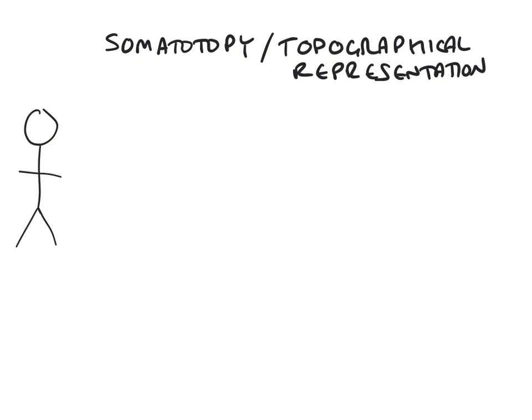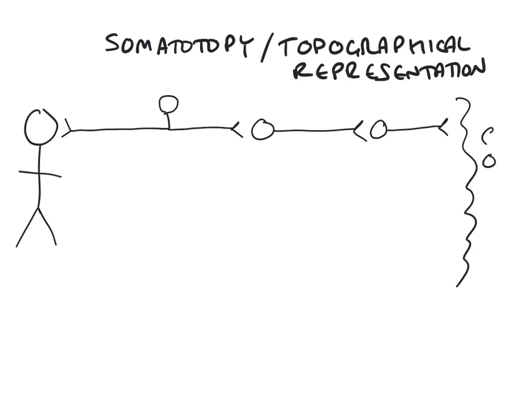So let's start off by drawing a person — there's the head, the arms and the legs. You can see I'm not a natural artist, but it works. Let's think of these three regions: the head, the arm, and the leg. The head has various receptors that communicate with first-order sensory neurons, which in turn synapse upon second-order sensory neurons, which in turn synapse upon third-order sensory neurons that project to the sensory cortex.